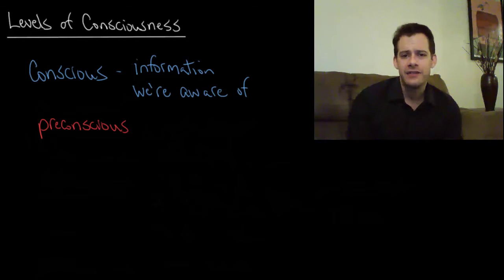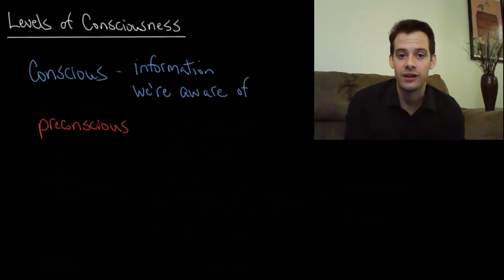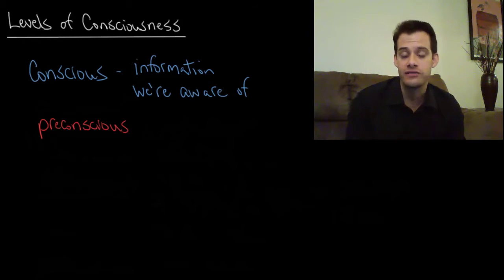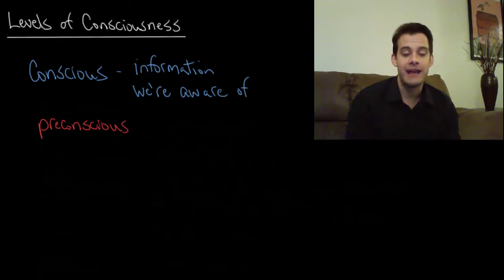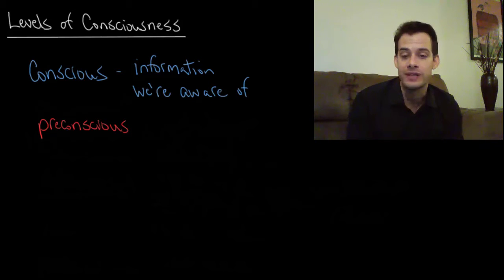Within that, there are different levels of access to information. It's not the case that we have the same high level of access to all information about the environment or about ourselves — there are different levels, and that's what we're going to look at in this video. The first level of consciousness would be information that we're conscious of. This is stuff that we are aware of, we can think about, and we can actively engage with.